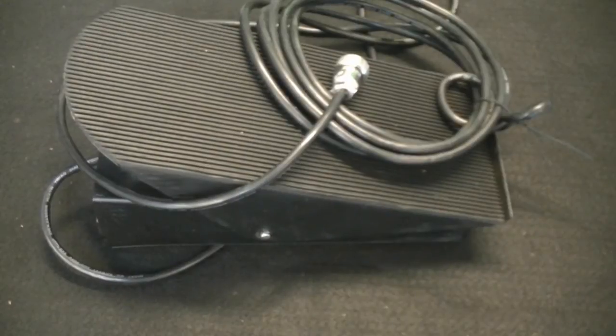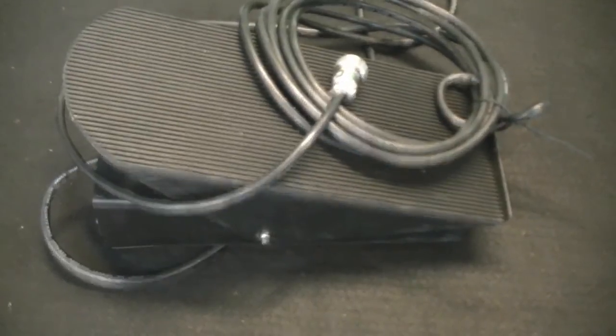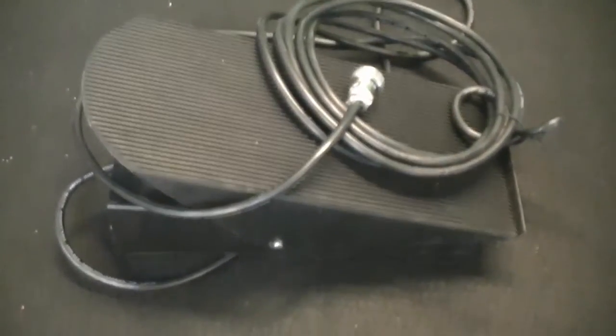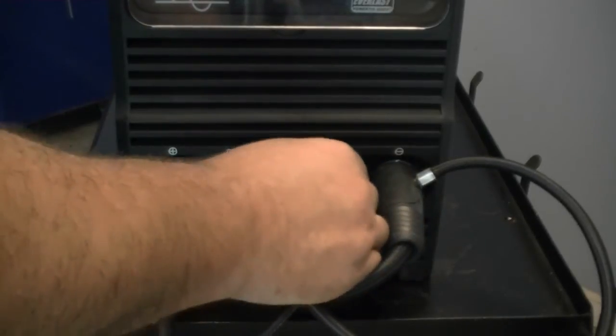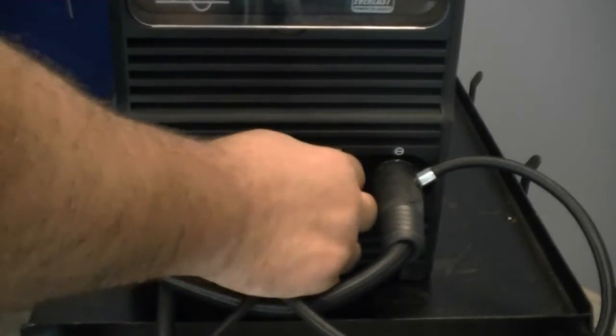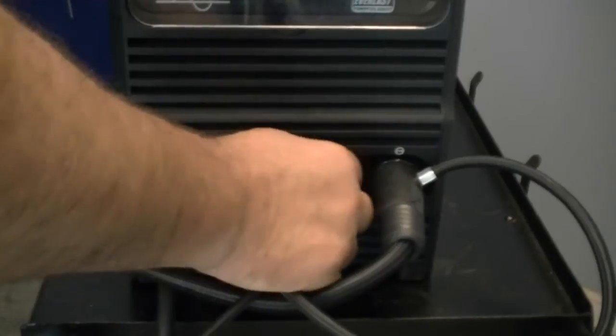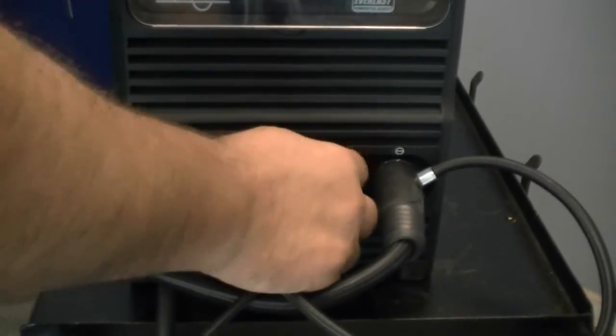Next we'll make the connections for the foot pedal and or the torch switch. Simply take the seven pin connector and plug it into the plug marked control. Make sure the locking collar is screwed down completely.